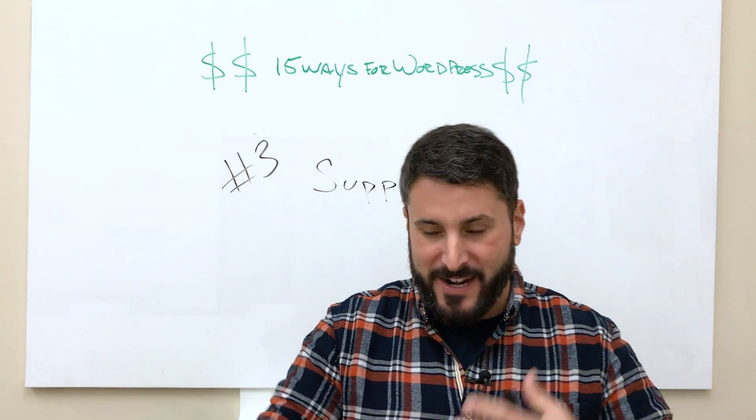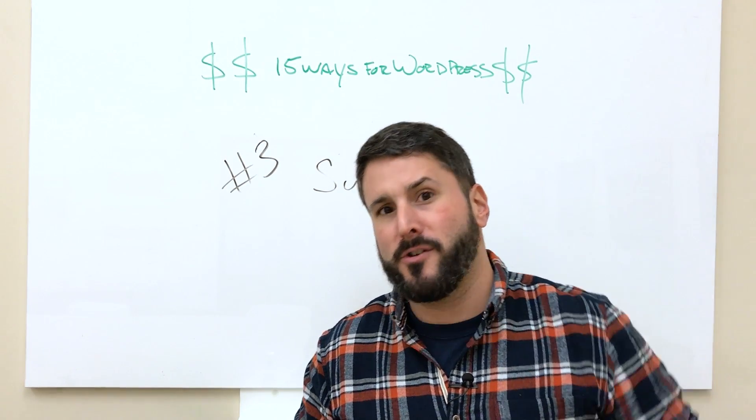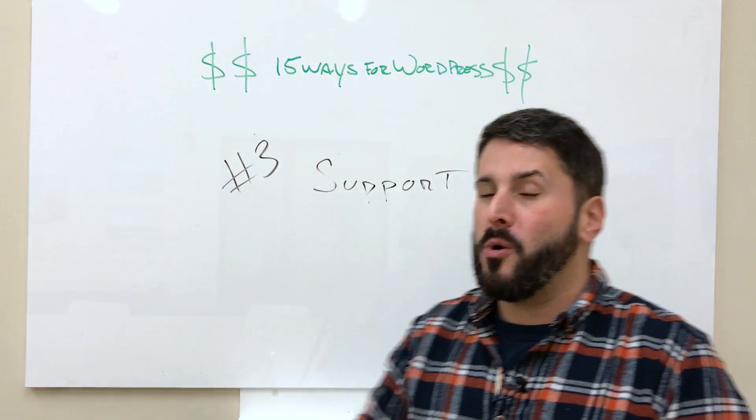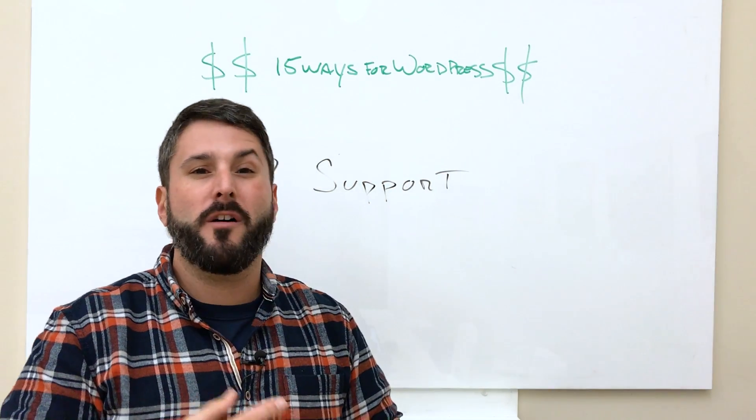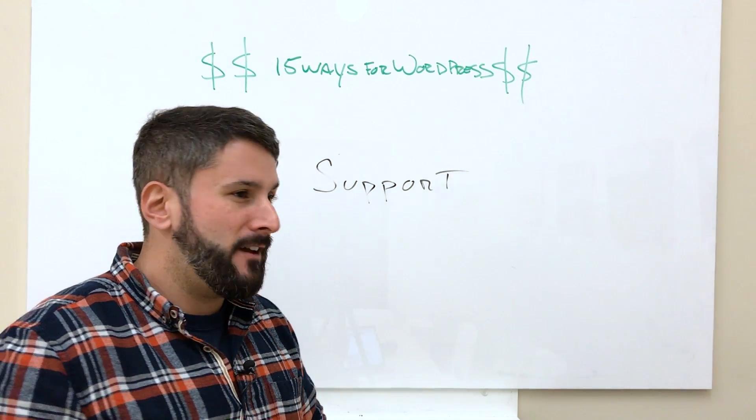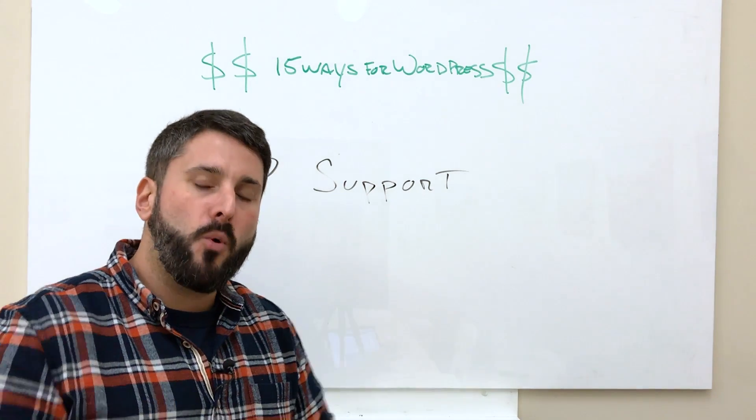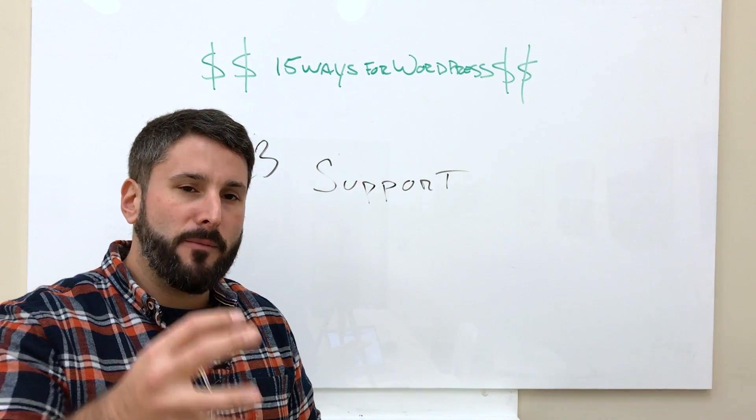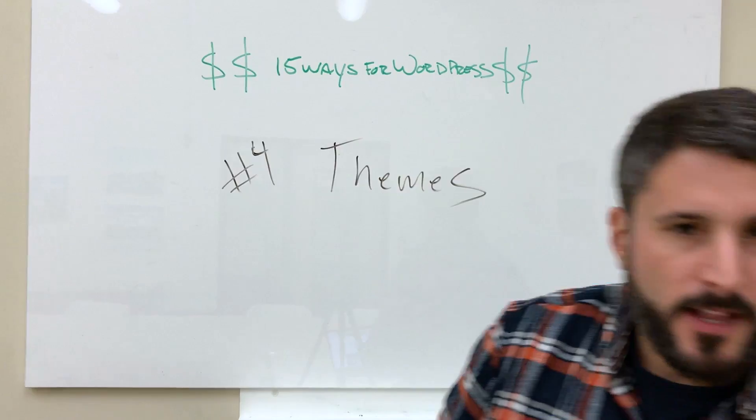You can go at the real low end and just try to get a volume play, get as many people as possible under your monthly recurring number. Or you can go at the real high end, the real sort of white glove, boutique kind of feel of supporting WordPress. Really finding a way to support somebody in WordPress is another great way to create revenue.